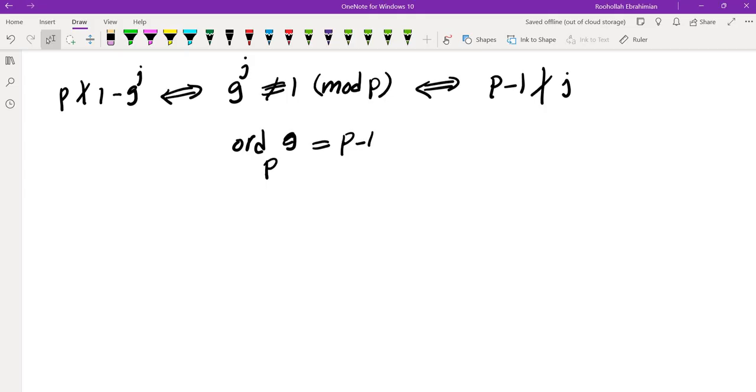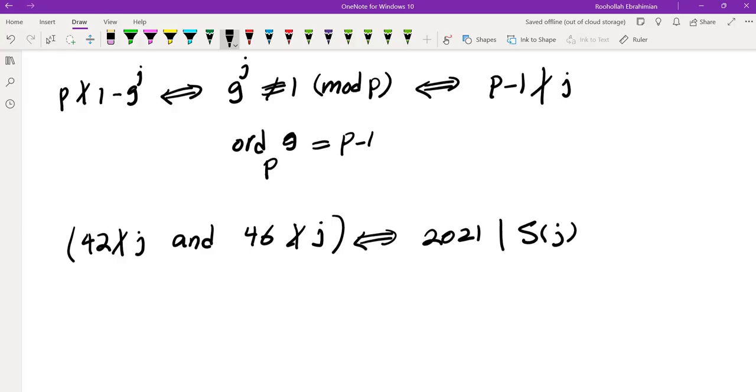So what's the answer to the question now? The answer is 42 does not divide J and 46 does not divide J. That is the condition for 2021 dividing S(J).